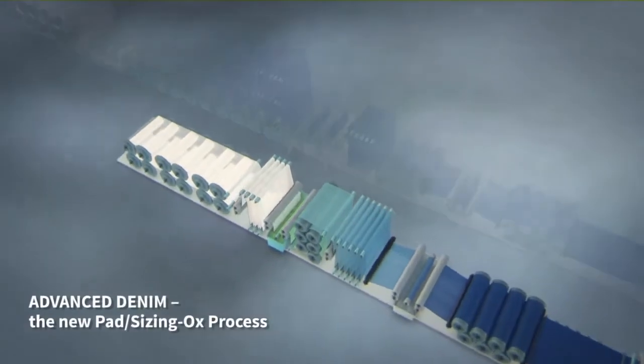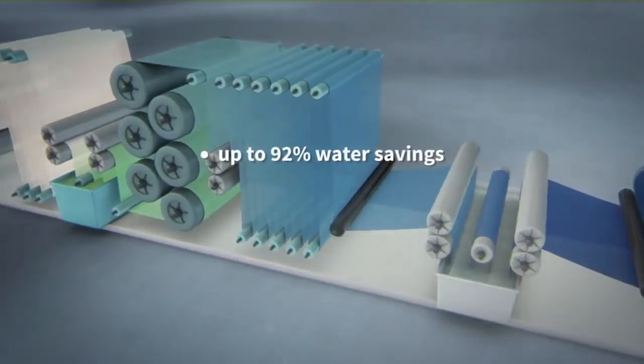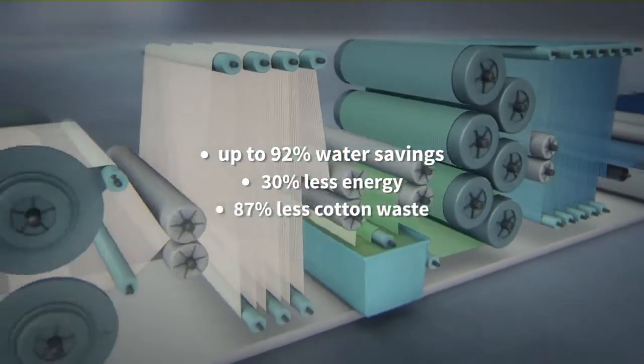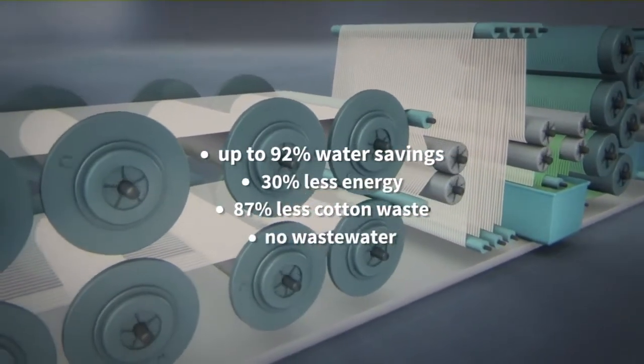The groundbreaking technology of Advanced Denim, the new pad sizing ox process, provides savings of up to 92% water, 30% energy and 87% cotton waste during dyeing and sizing, and generates absolutely no wastewater.